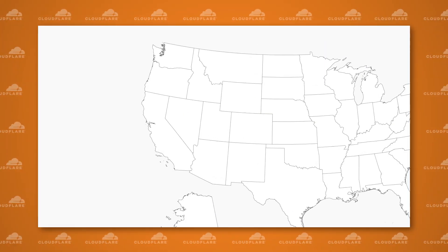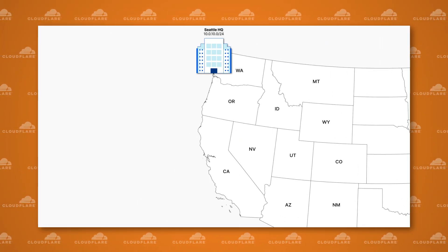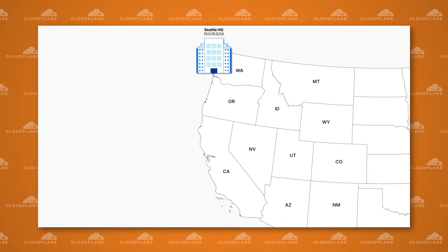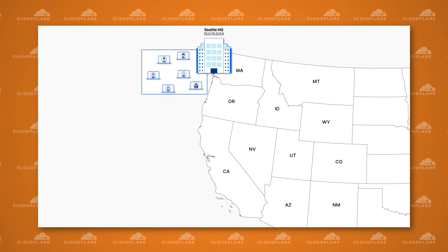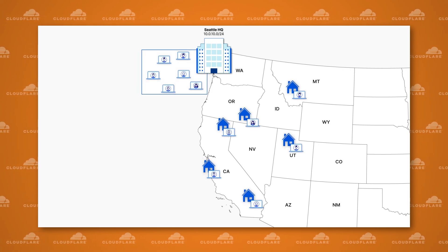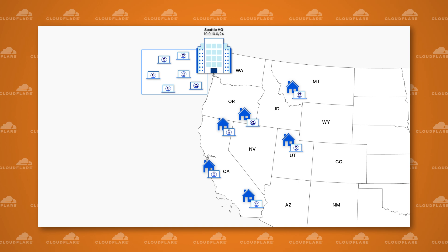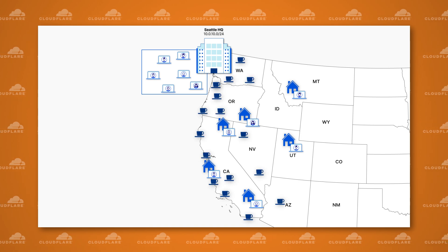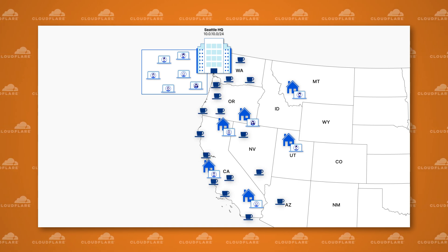Let's dive deeper into our coffee company example. First, they have their main headquarters in Seattle. Most HQ employees live locally, and about half travel into the office, with the other half working remote at home. Second, they have around 40 coffee shops down the west coast of America, each with a few employees.